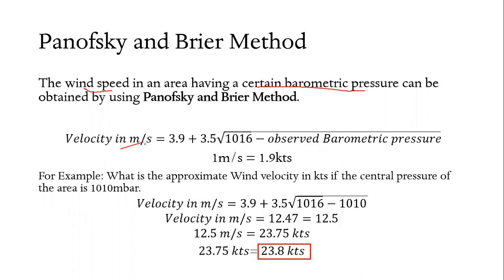Using the formula in obtaining the wind velocity in meter per second, we have 3.9 plus 3.5 square root of 1016 minus the observed barometric pressure.